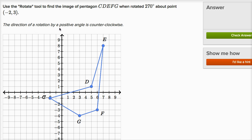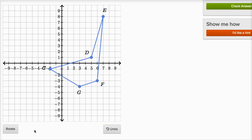The direction of rotation by a positive angle is counterclockwise. All right, using the rotate tool to rotate around (-2, 3).